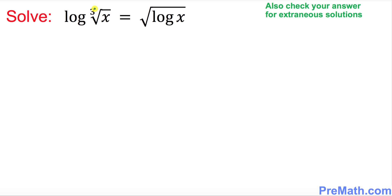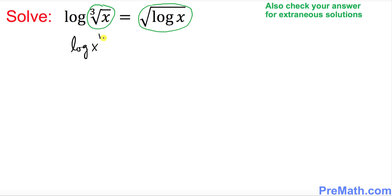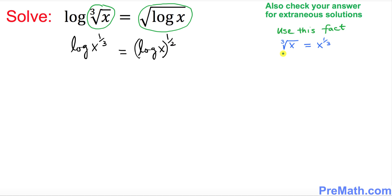The very first step is we want to make this equation simple. I want you to look at the radical part and the radical part over here. We want to convert this radical into exponential form. So this could be written as log of x — if this is a cube root, you convert it into the exponent, this becomes 1 over 3. And here we have a square root, which means the index is 2, so I can write log of x power 1 over 2. We used the fact that the cube root of x equals x power 1 over 3.